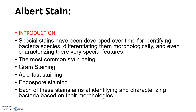There are certain special stains that have been developed over time for identifying bacterial species and differentiating them morphologically, even characterizing special features. The most common stains used for this type of differentiation are Gram staining, acid-fast staining, and endospore stain. Each of these stains aims at identifying and characterizing bacteria based on their morphology, such as cell wall, acid-fastness, and endospore structures.